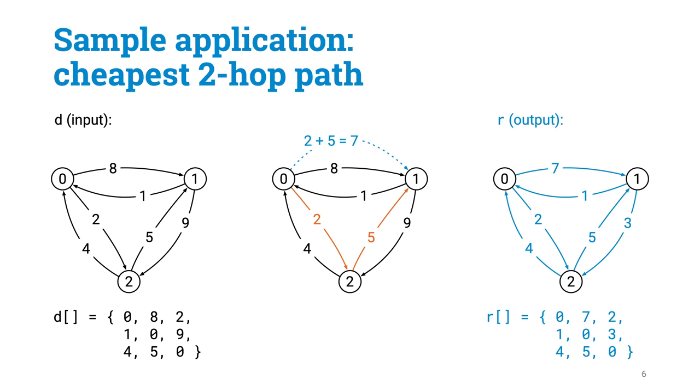And we want to compute a result matrix R, that is also an n-by-n matrix, and that contains for all pairs of points A and B, what is the cost of the cheapest tour that takes at most two hops and takes you from A to B.